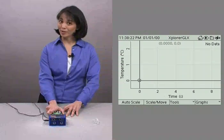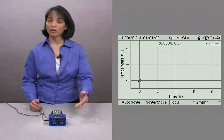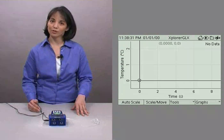And did you notice what happened? The GLX automatically recognized the temperature probe and plotted temperature on our y-axis and time on our x-axis. It's now ready for some data.